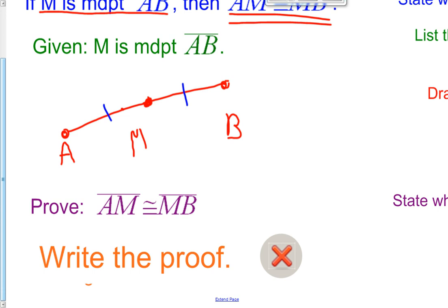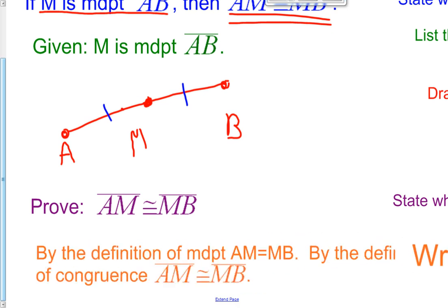Step five is to actually write the proof. This proof is very short because the definition of midpoint is built right in. By the definition of midpoint, AM equals half of AB. And by the definition of congruent, segment AM is congruent to segment MB. So there you have successfully written the proof.